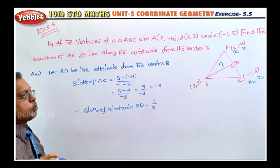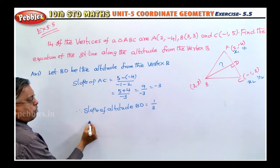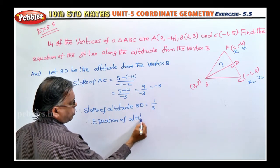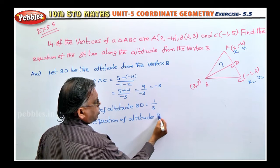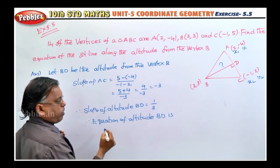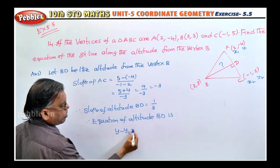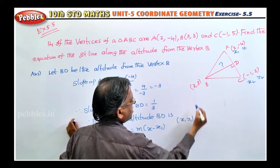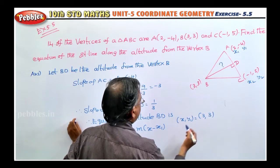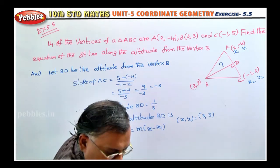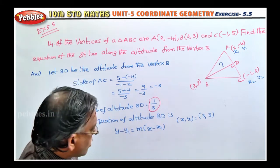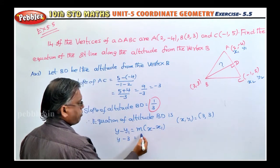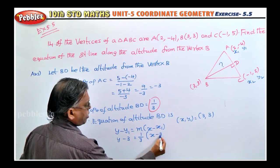Now we have the slope of altitude BD as 1/3. The equation of altitude BD using slope-point form is: y - y₁ = m(x - x₁). Here x₁, y₁ is vertex B = (3, 3), and slope m = 1/3. So: y - 3 = (1/3)(x - 3). Now cross multiply.